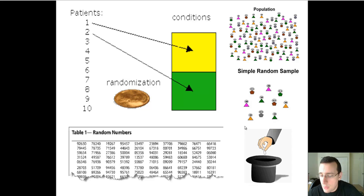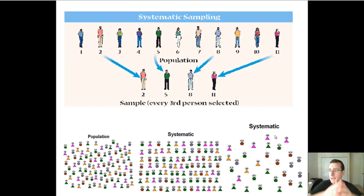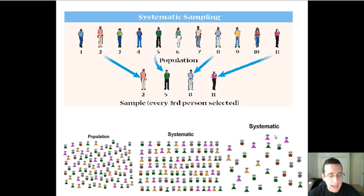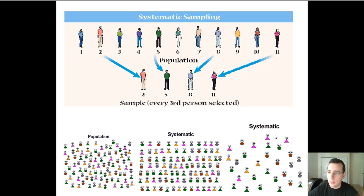There's also systematic sampling. That's when you randomly give people numbers and then say, 'I'm going to pick every third person in the population.' The only danger with systematic sampling is that you've got to make sure that when people line up, they're lined up randomly. Otherwise you'll have a problem when you select from that group. But it's a very simple method to deliver randomization, so a lot of people use it.